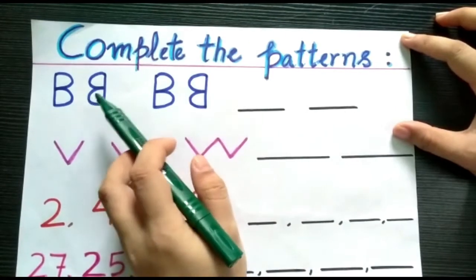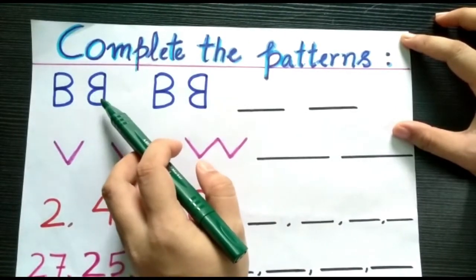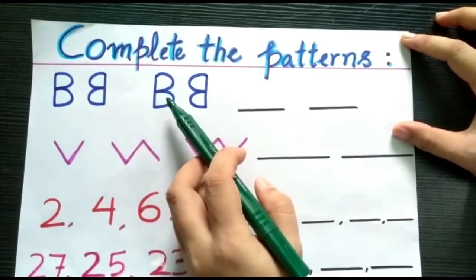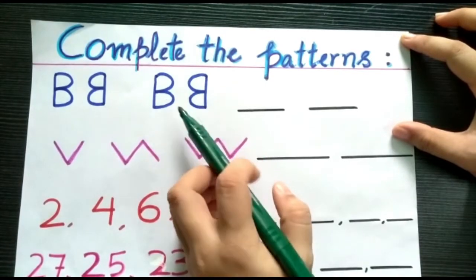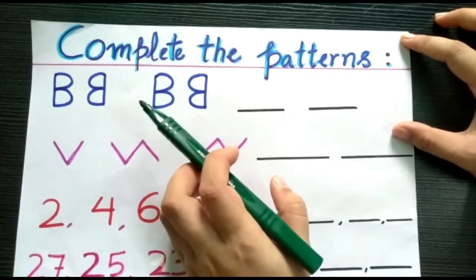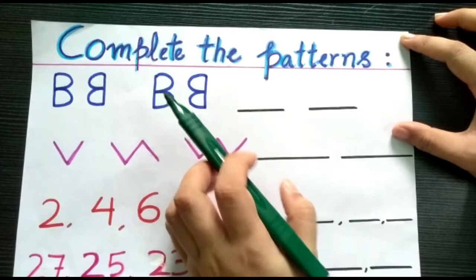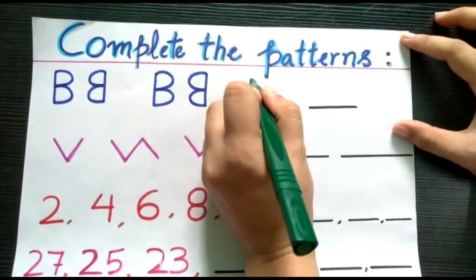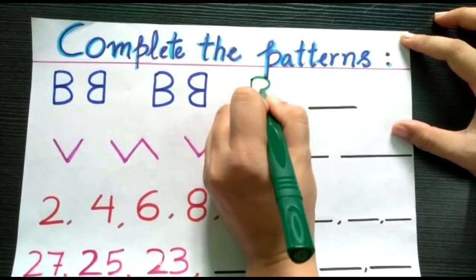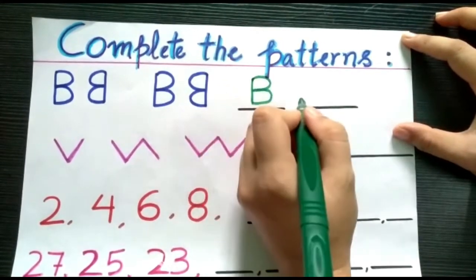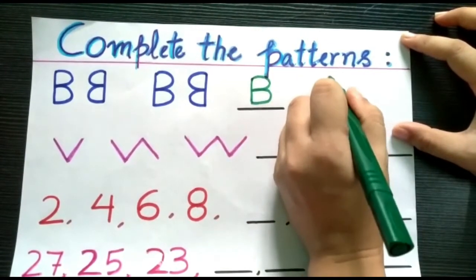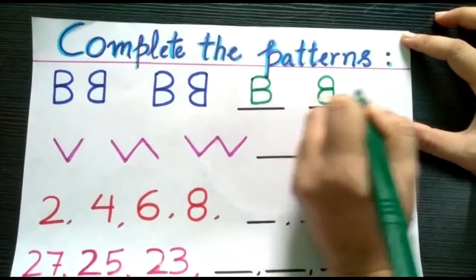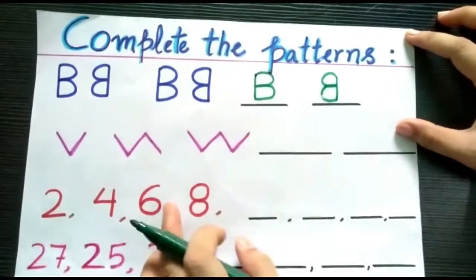Children, here we have B, then next is reverse P. Again, we have B, reverse P. Therefore, we can say that it is following a certain pattern. So, next pattern will be B, then followed by reverse P. That's how the pattern follows.